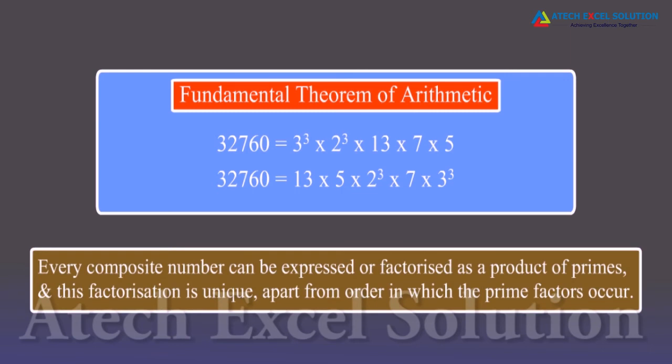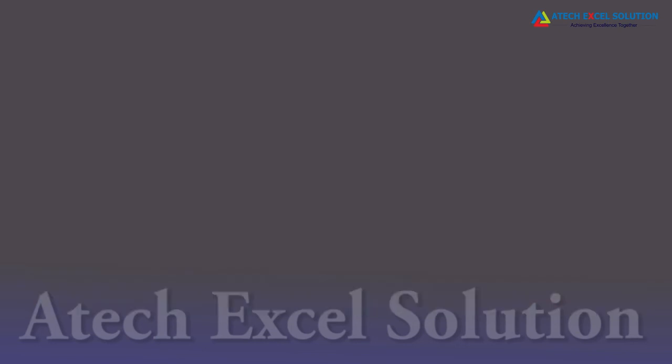Every composite number can be expressed or factorized as a product of primes, and this factorization is unique apart from the order in which the prime factors occur. Let's find out the HCF of 96 and 404 by prime factorization method.